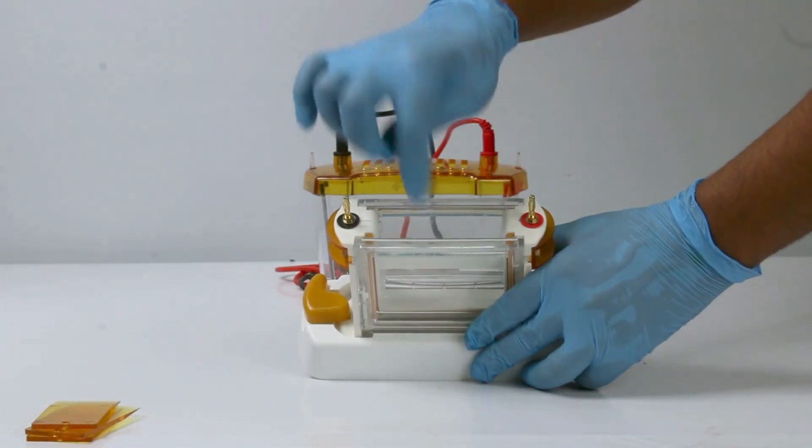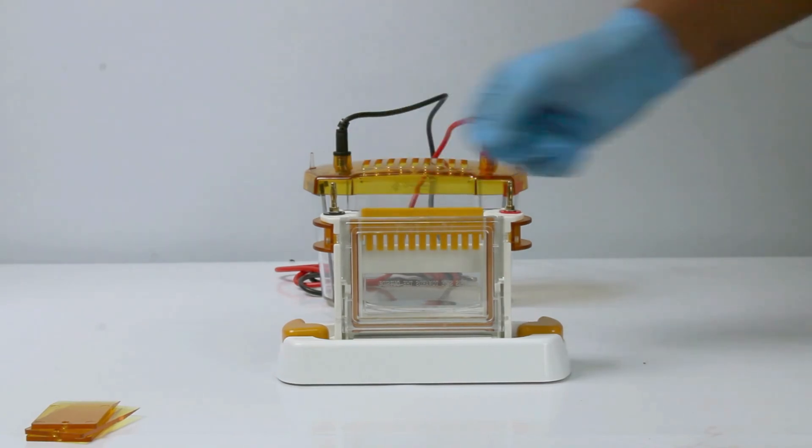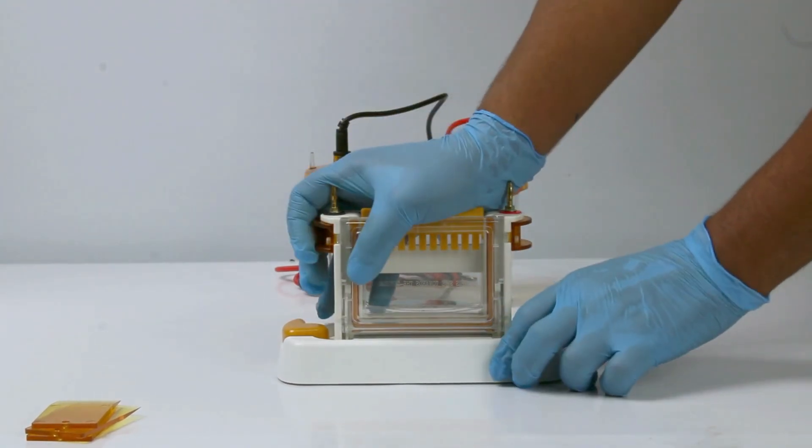Load the gel solution into the chamber between the glass plates as per your experimental protocol. Insert the appropriate comb and allow the gel to polymerize. Once the gel has set, loosen the knob.